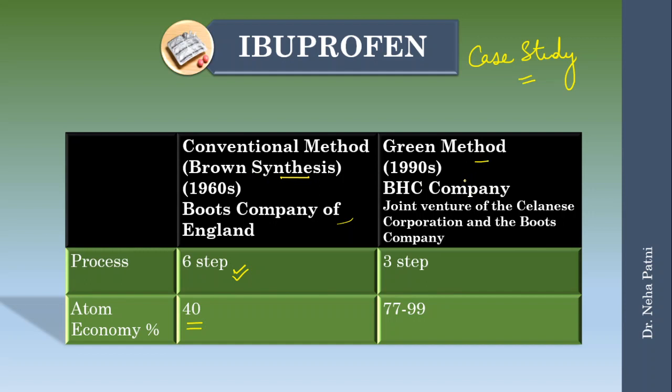This is a green synthesis where they reduced the number of steps. Imagine if six steps change to three steps - that was generation of very less waste and very fewer byproducts were there. So that was a green method following atom economy. The atom economy increased to imagine 77 to 99 percent while earlier it was only 40.